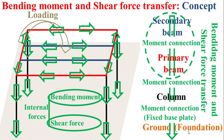If we consider the bending moment and shear force transfer between secondary beams and primary beams, the secondary beam is characterized as the child member, which means it is the steel member from which the bending moment and shear force should be transferred, while the primary beam is characterized as the parent member — the steel member to which the bending moment and shear force should be transferred.